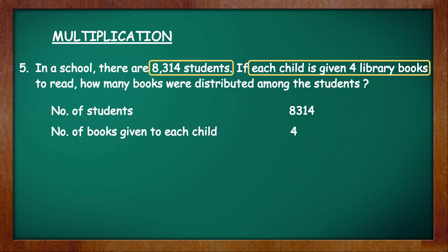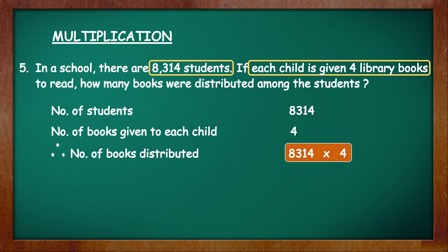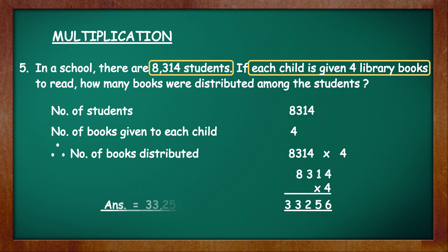After that, we can calculate the answer. Therefore, number of books distributed: 8314 into 4. Remember, it is important to write both the numbers that have to be multiplied after the last statement, and then do the multiplication below. 8314 into 4 is equal to 33256. The answer is equal to 33256 and the unit is books.